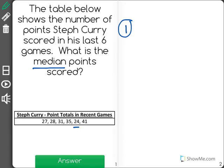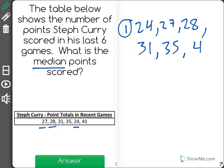So the smallest number I see is 24, then 27, 28, 31, 35, and 41 from least to greatest. Now what we need to do is we need to find the number